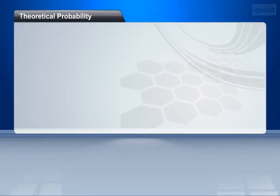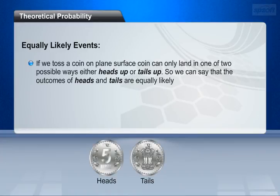Before going to learn about theoretical probability, let's learn about equally likely events first. If we toss a coin on a plain surface, the coin can only land in one of two possible ways: either heads up or tails up. So we can say that the outcomes of heads and tails are equally likely.